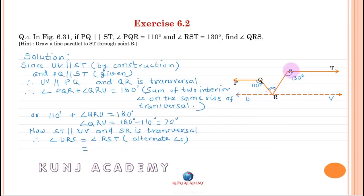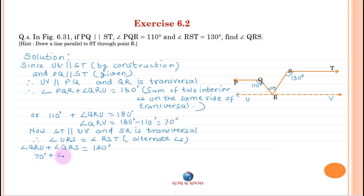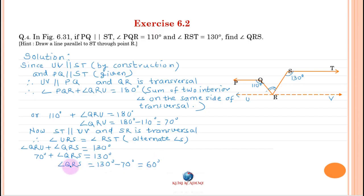Angle URS can be written as angle URQ plus angle QRS. Angle QRU is equal to 70 degrees. Transferring 70 degrees to the right-hand side, angle QRS equals 60 degrees. Answer: angle QRS equals 60 degrees.